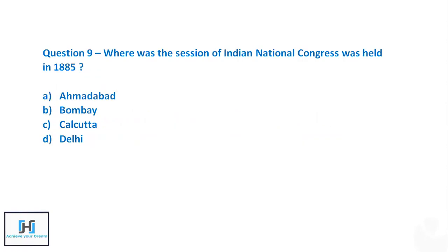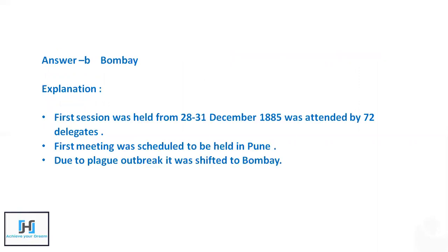Question 9: Where was the session of the Indian National Congress held in 1885? Options are Ahmedabad, Bombay, Calcutta, or Delhi. The first session of the Indian National Congress was held at Gokuldas Tejpal Sanskrit Mahavidyalaya, Bombay. It was originally supposed to be held in Pune, but due to a plague outbreak, it was shifted to Bombay. The session was attended by 72 delegates, and the first President was W.C. Banerjee (Womesh Chandra Banerjee).